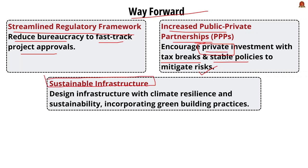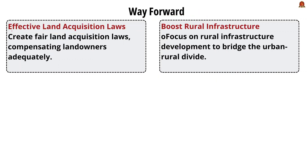The third way forward is sustainable infrastructure development — designing infrastructure with climate resilience, sustainability, and adaptability for growing cities. Incorporating green building practices will help address rapid urbanization in cities like Chennai and Mumbai. The fourth is effective land acquisition laws — creating fair land acquisition laws and adequately compensating landowners will lead to faster project approvals and completion of infrastructure projects like roads and railways.